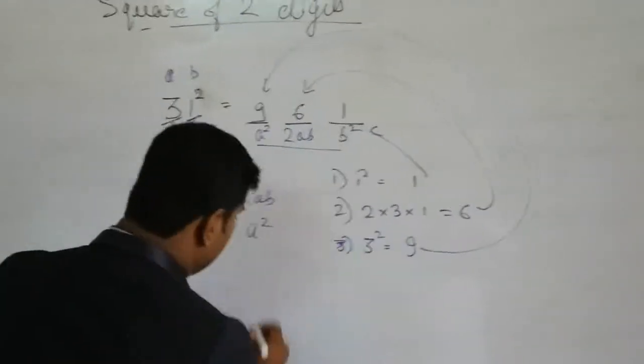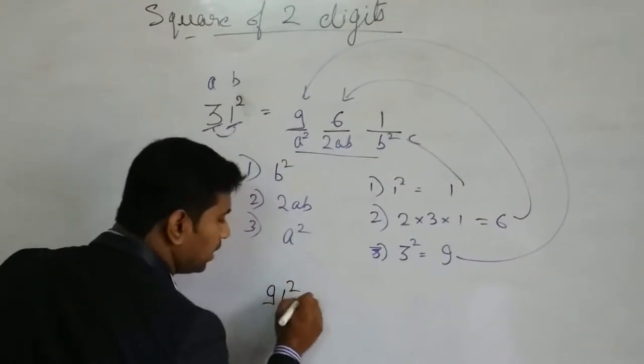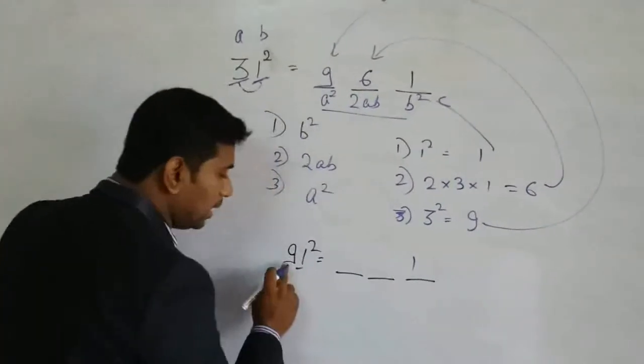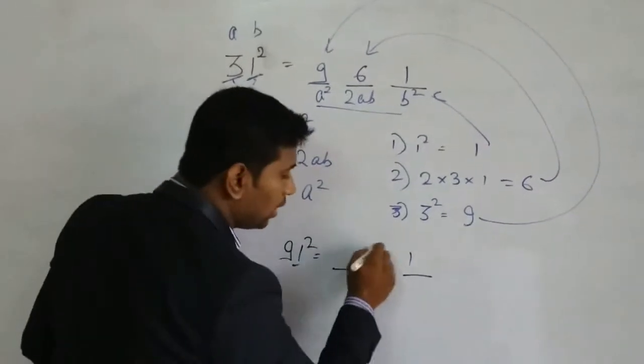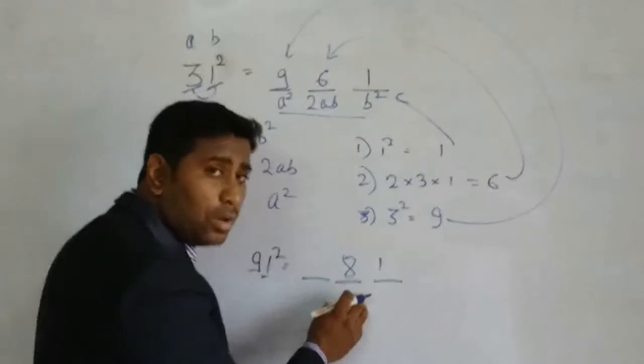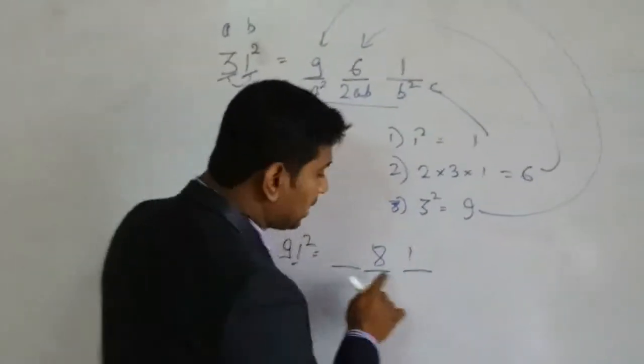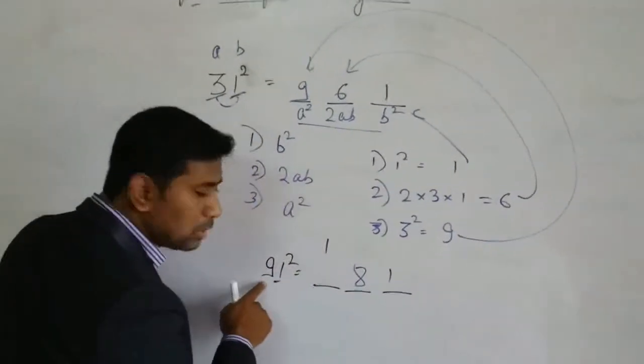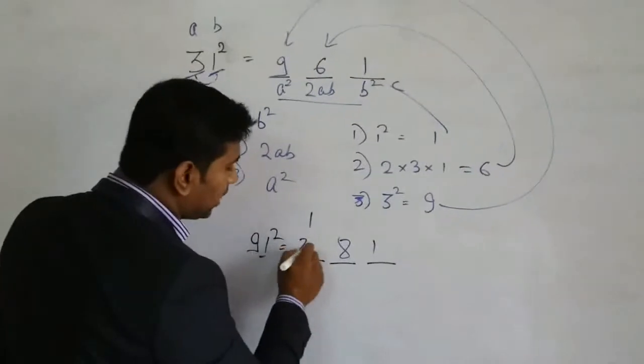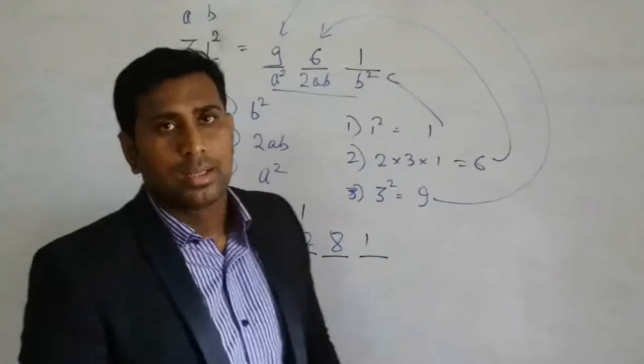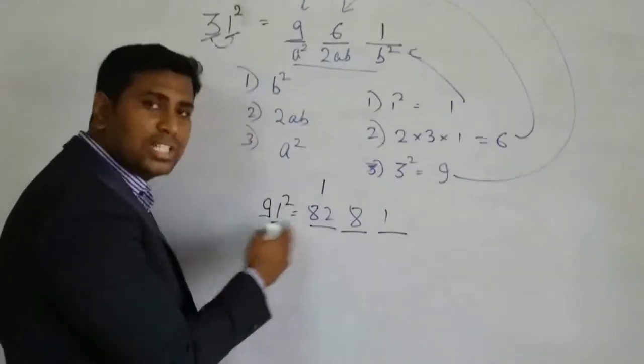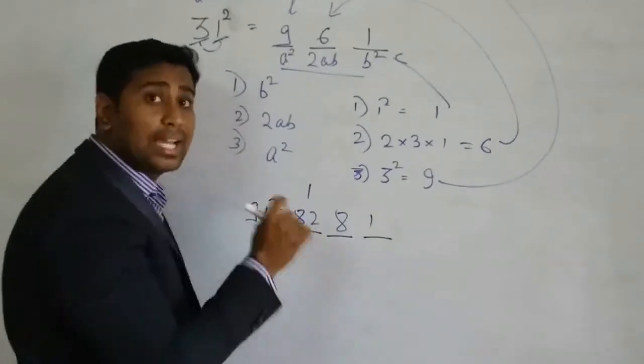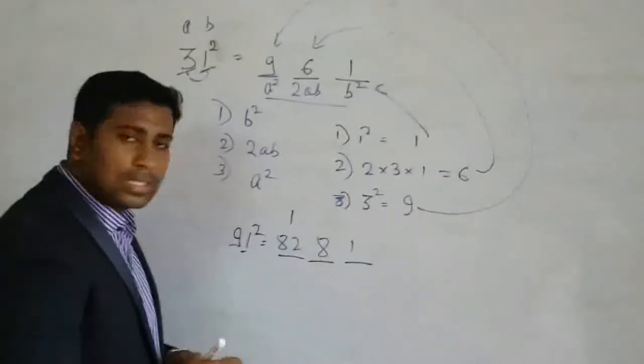So again we will see some more questions. So let us see, 91 square. So again 3 steps. First, 1 square, 1. Second, 9 into 1, 9 into 2, 18. So here 18. Now we can see that 18, we cannot keep 2 digits at the same line. There would be 1 digit in a blank and 1 will be carry. Then 9 square, 81 plus 1, 82. Now in the last series, you can keep 2 digits. Why? Because there is no more digit where you can keep any carry. That is why we are keeping both the digits in the same line at the last line only.